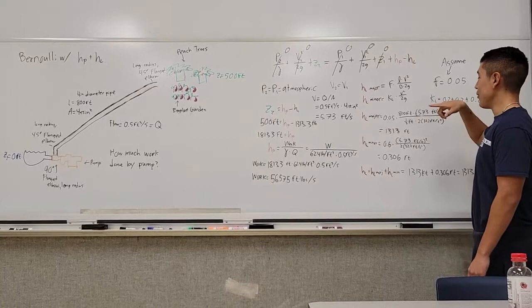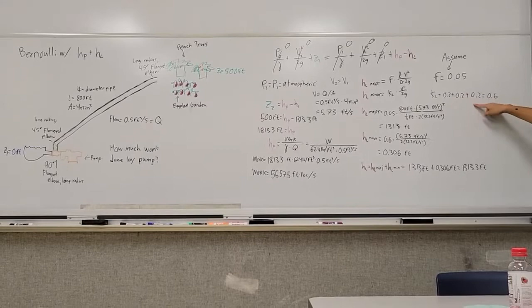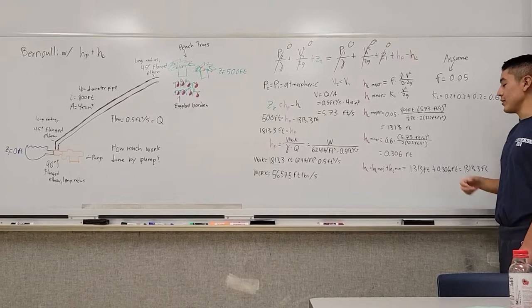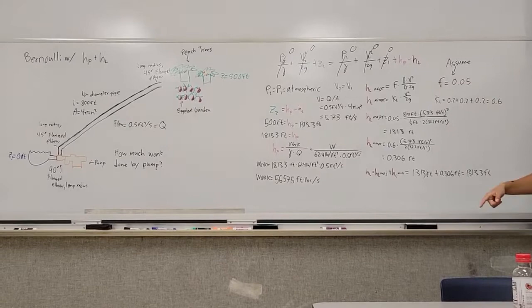For our minor head loss, our KL, we're going to add 0.2 plus 0.2 plus 0.2, which comes from the coefficients of the three flanged elbows. That gives us 0.6. We plug in our known terms into the minor head loss equation and we get 0.306 feet.